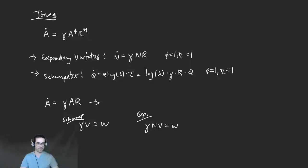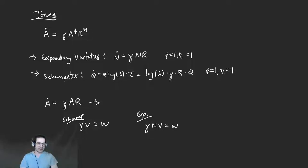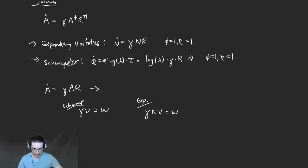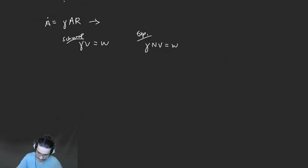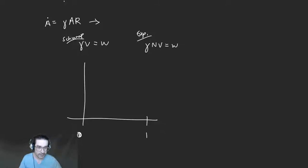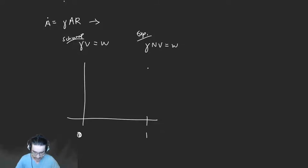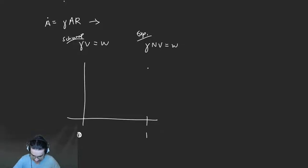That would be, in the aggregate, something like eta less than one. You can imagine ordering everyone in the world or the economy by their propensity to do research. If everyone had the same propensity it would be a flat line, but you can imagine there's some ordering — we're basically ordering people by their propensity to do research.